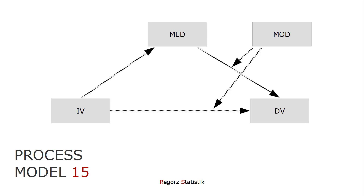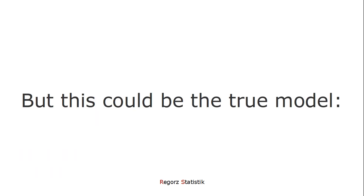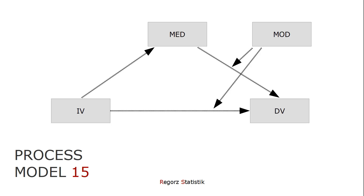Let's look at what could happen if you use process model 14. Your theory is that you have a moderation of the B path only. But the reality could be that you have a moderation of both the B path and the C prime path — or even just a moderation of the C prime path, even if your theory says the moderation is for the B path. Before you get your data, you can't really be sure where the moderation is. Your theory could be wrong. If you know in advance beyond any doubt what the correct model is, you don't need statistics. It only makes sense to run statistical tests if you're not completely sure, so you have to use a method that gives correct results even if your theory is wrong.